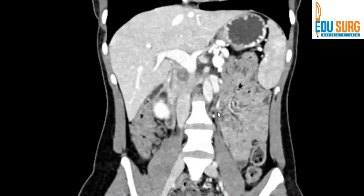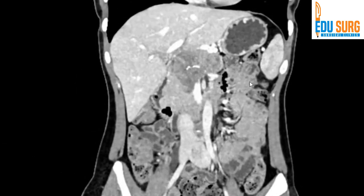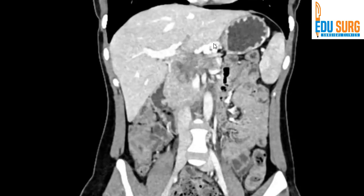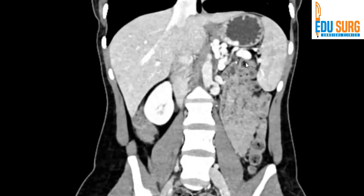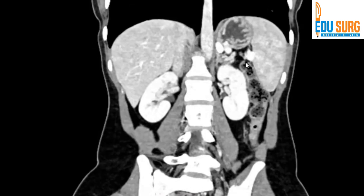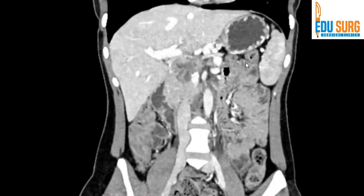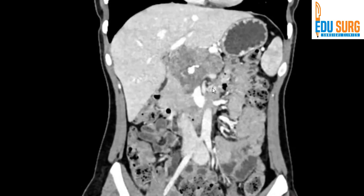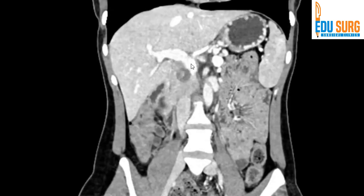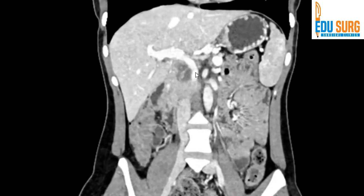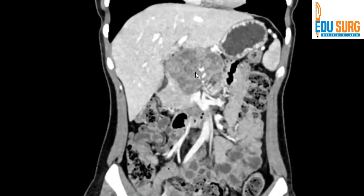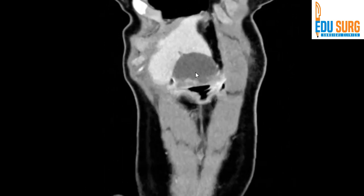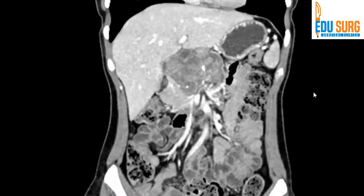We have seen the coronal section. On review, you can again see a lot of collaterals. The spleen is slightly enlarged, and you can see the entire tumor. You can see the portal vein opening up — these tumors usually compress the portal vein and it can be separated.